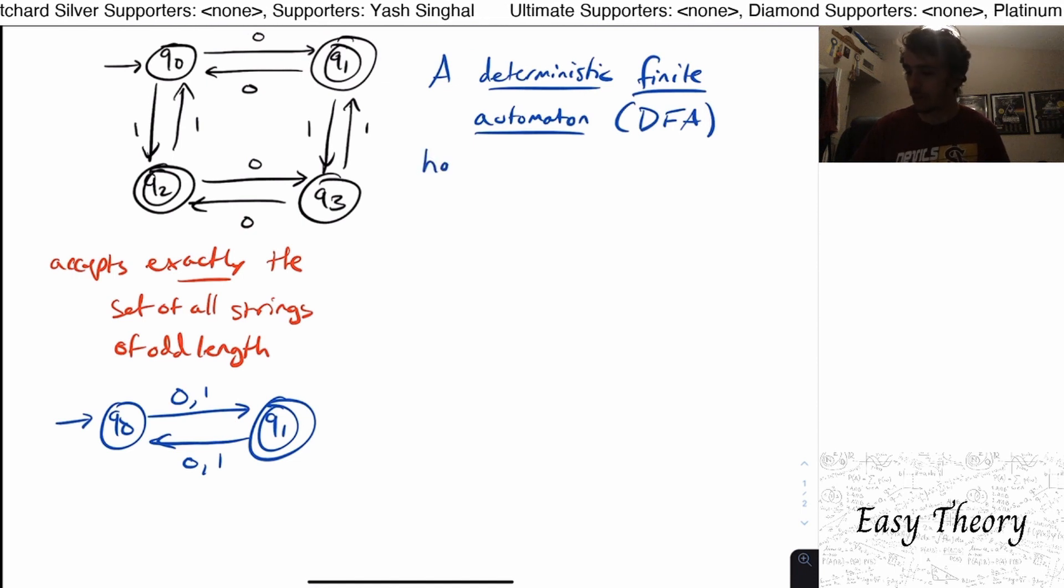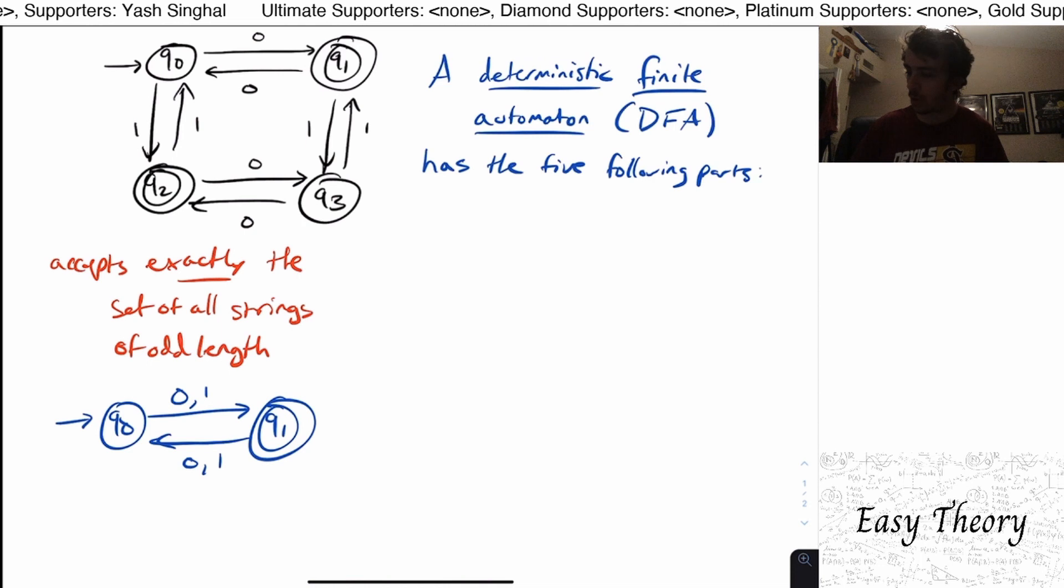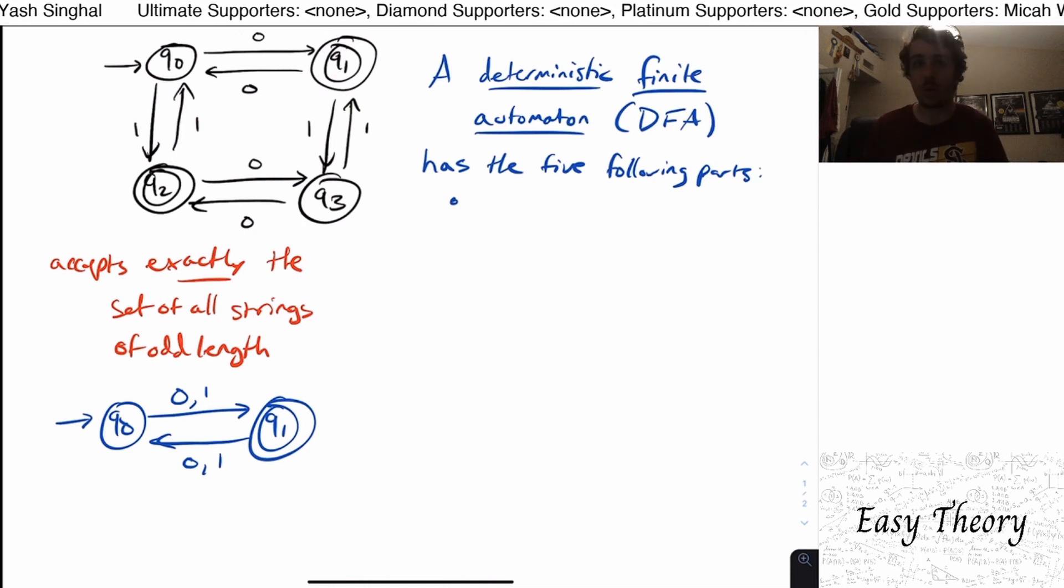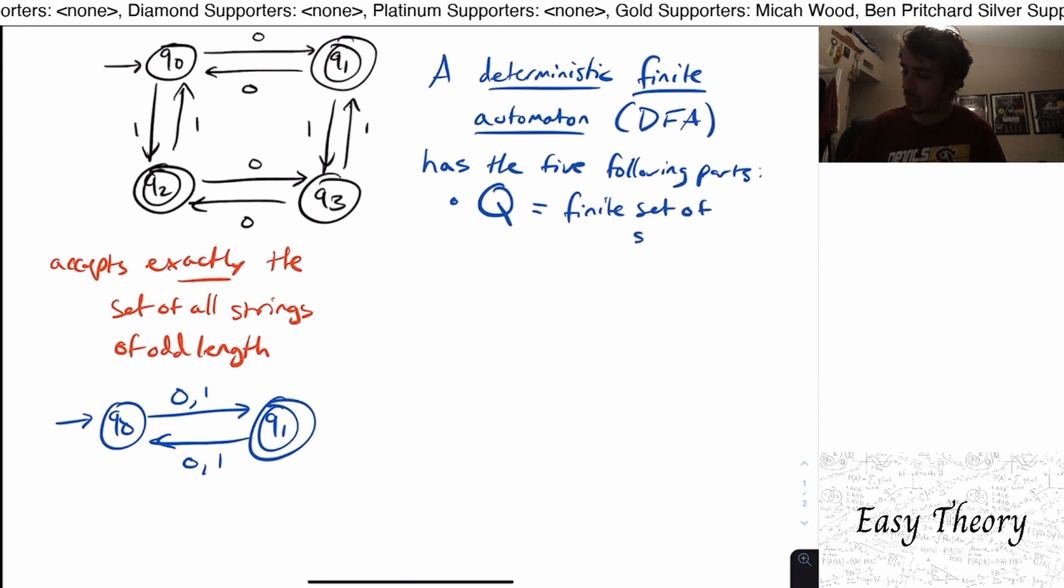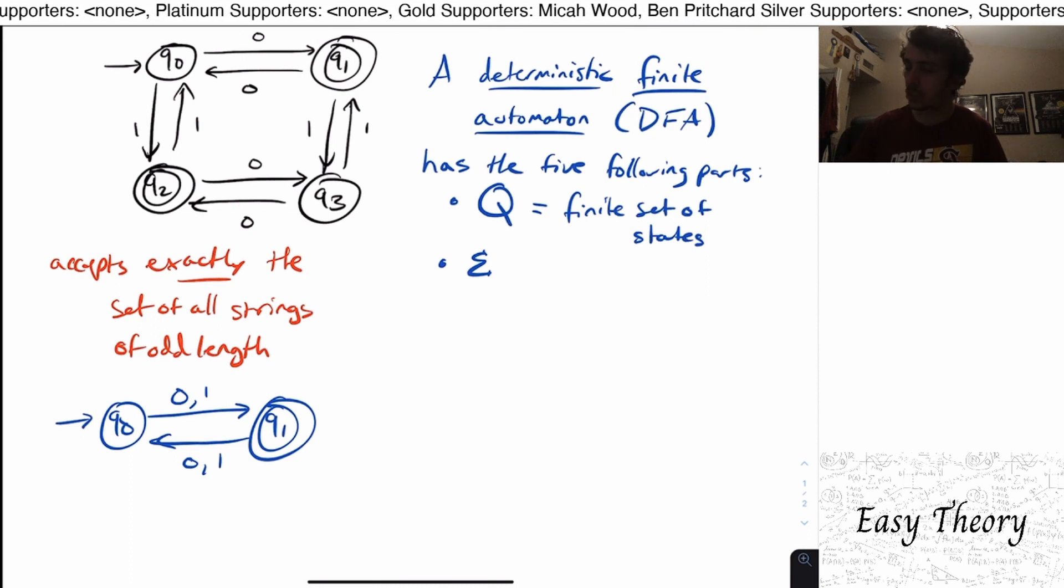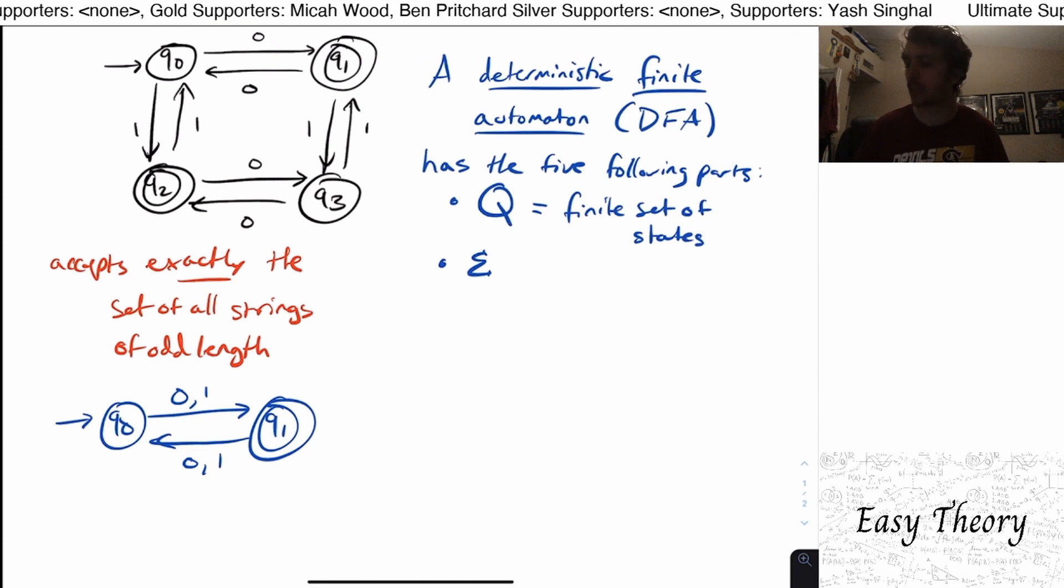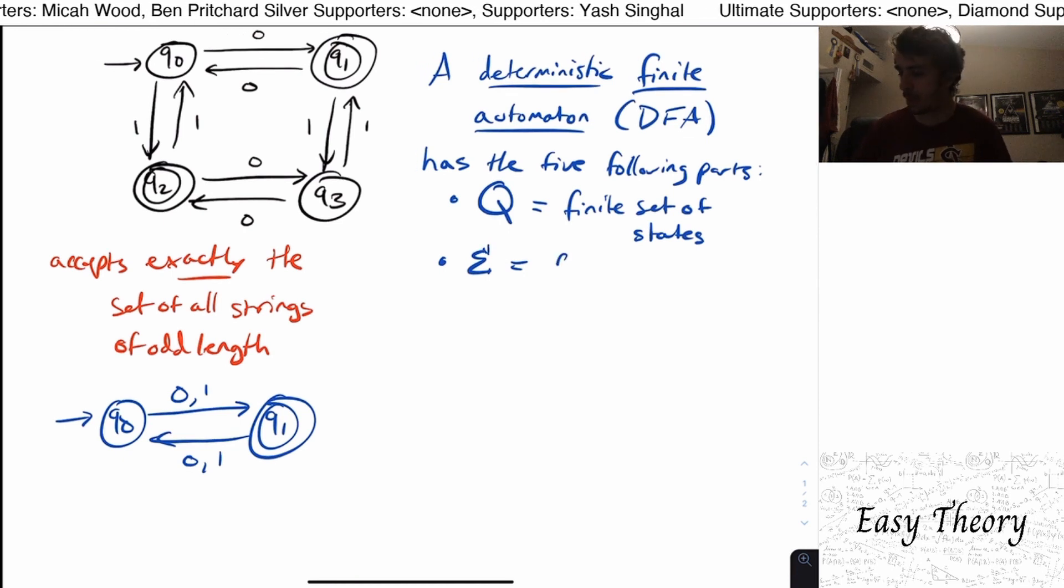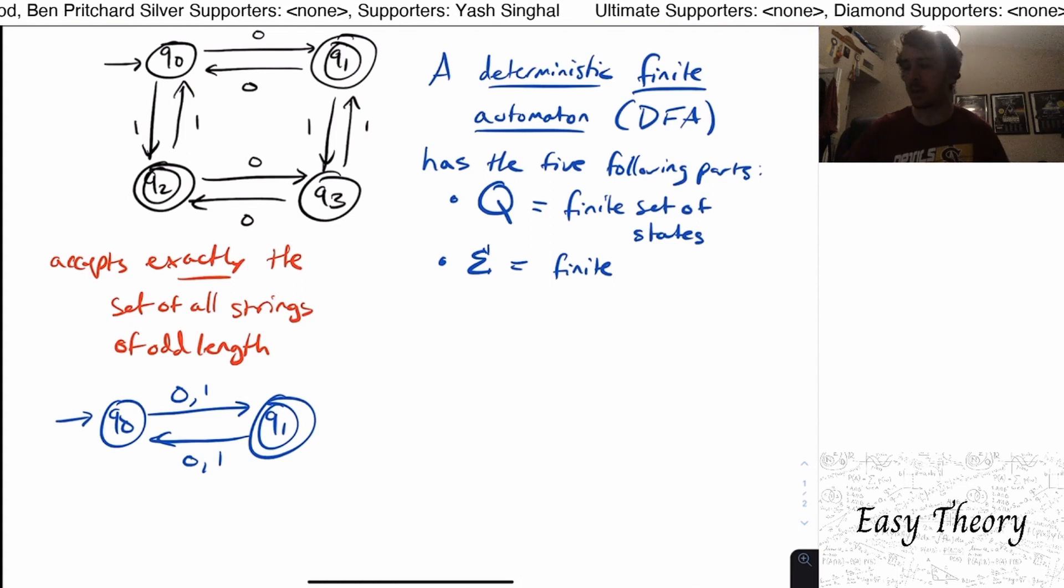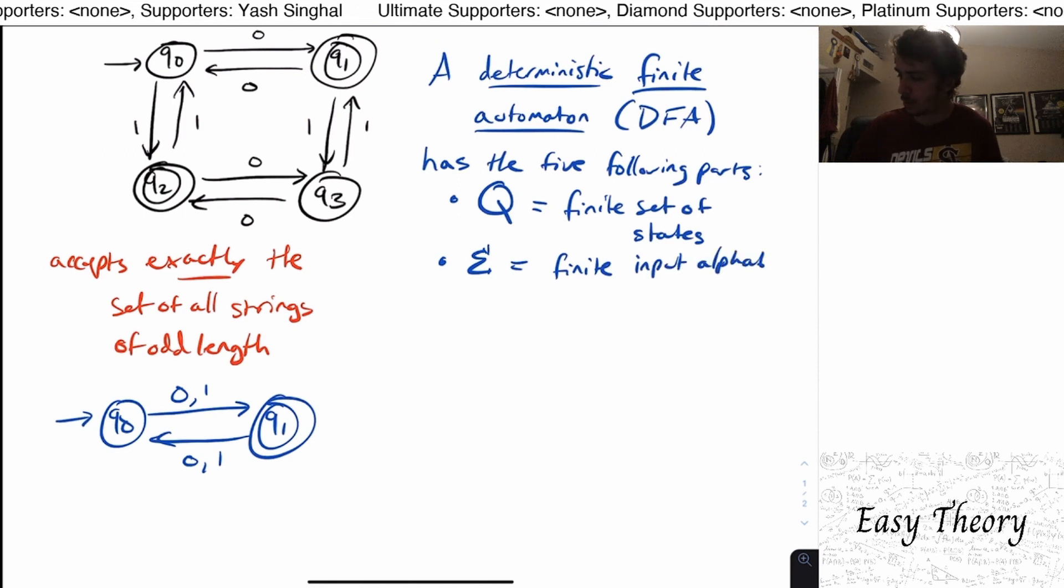So how do we specify a DFA here? Well, we have to give these five parts. So it has the five following parts. And what are those? Well, we need to be able to specify, well, what the states are in the first place. So we call those capital Q, which is a finite set of states. Another one is, well, we got to be able to specify on the transitions themselves, what the transitions are, are they A and B or 0, 1, 2, or what? What are the transition labels? So this sigma right here is the set of those labels. And we call that the alphabet. So more specifically, the input alphabet, because it deals with the input string. So it's a finite input alphabet. So that's the term that we'll use.